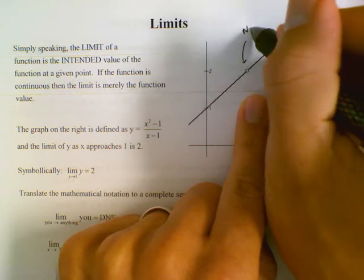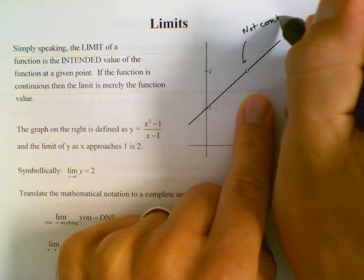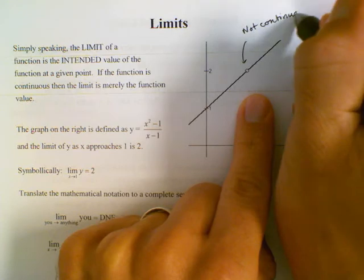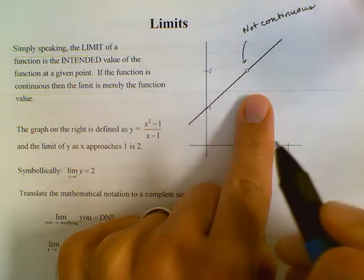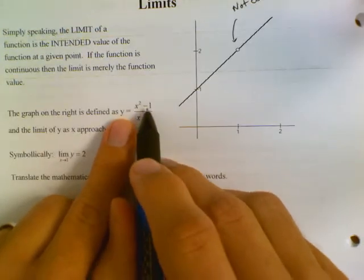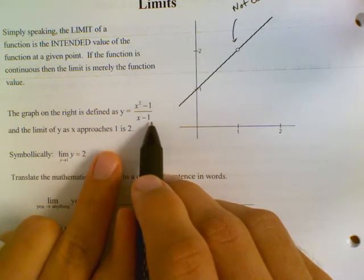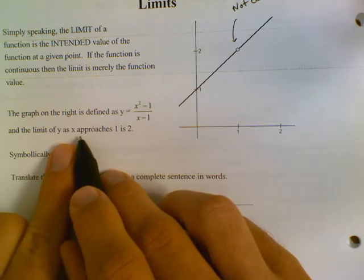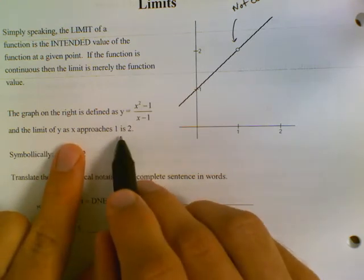This one's definitely not continuous, but it still has a limit. The graph is actually defined as y equals x squared minus 1 over x minus 1. The limit of y as x approaches 1 is 2.